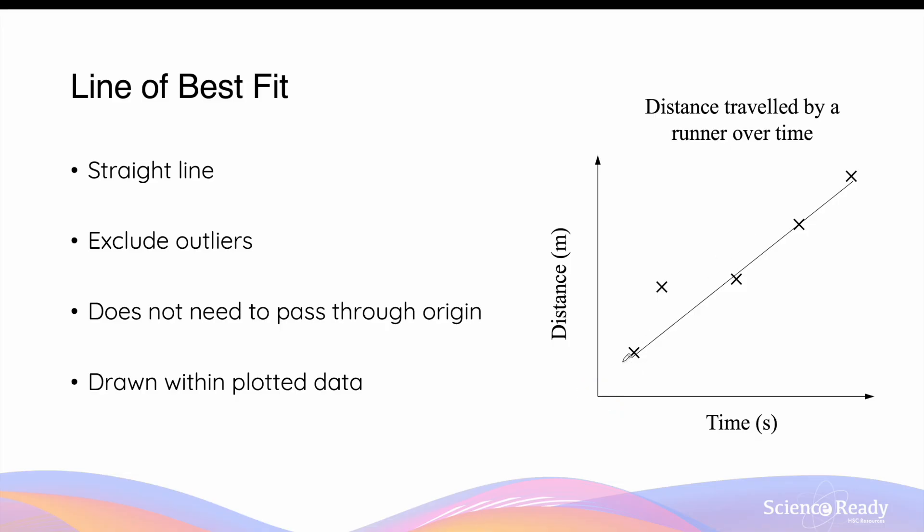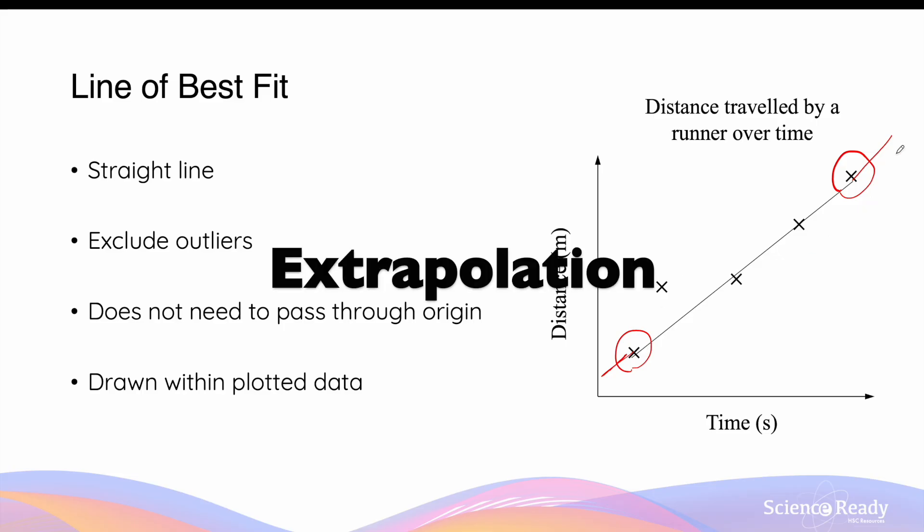Secondly, your line of best fit should be contained within your data points, between the first and last crosses. If the line of best fit goes beyond the first or beyond the last data point, this is what we call extrapolation. You're predicting that the trend will hold up outside your experimental results. Now most of the time, this may be a good assumption. The trend may hold up outside your results, but sometimes they may not. So it is invalid for you to draw a line of best fit beyond the data points you've obtained from the experiment without performing the actual experiment for those values.